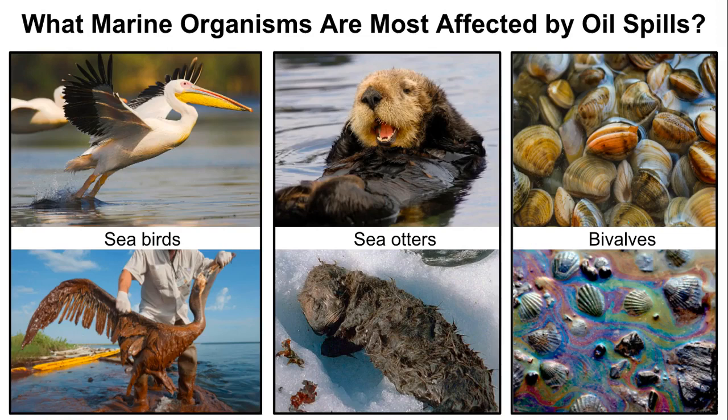What marine organisms are most affected by oil spills? As shown in these images, seabirds, sea otters, and bivalves greatly suffer from spills. Other animals that are important to mention are dolphins, sea lions, and sea turtles.